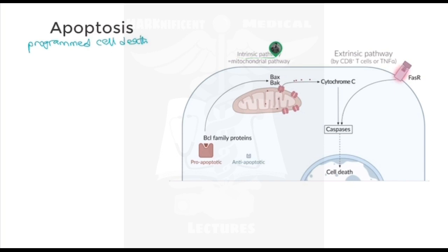Similar to necrosis, cell degradation during apoptosis follows a distinct pattern. However, the process by which cell organelles degrade is more tightly controlled. Therefore, apoptosis is often referred to as programmed cell death. Let's take a closer look at apoptosis. Apoptosis can be initiated by two different pathways: the intrinsic or the extrinsic pathway.